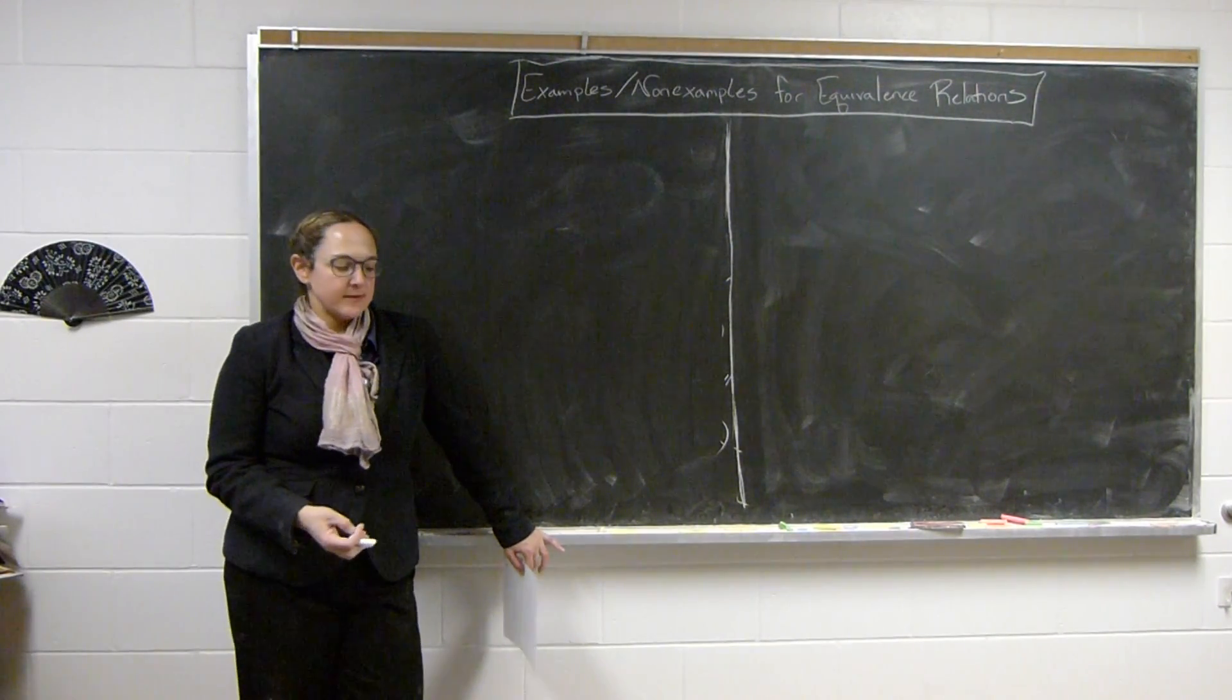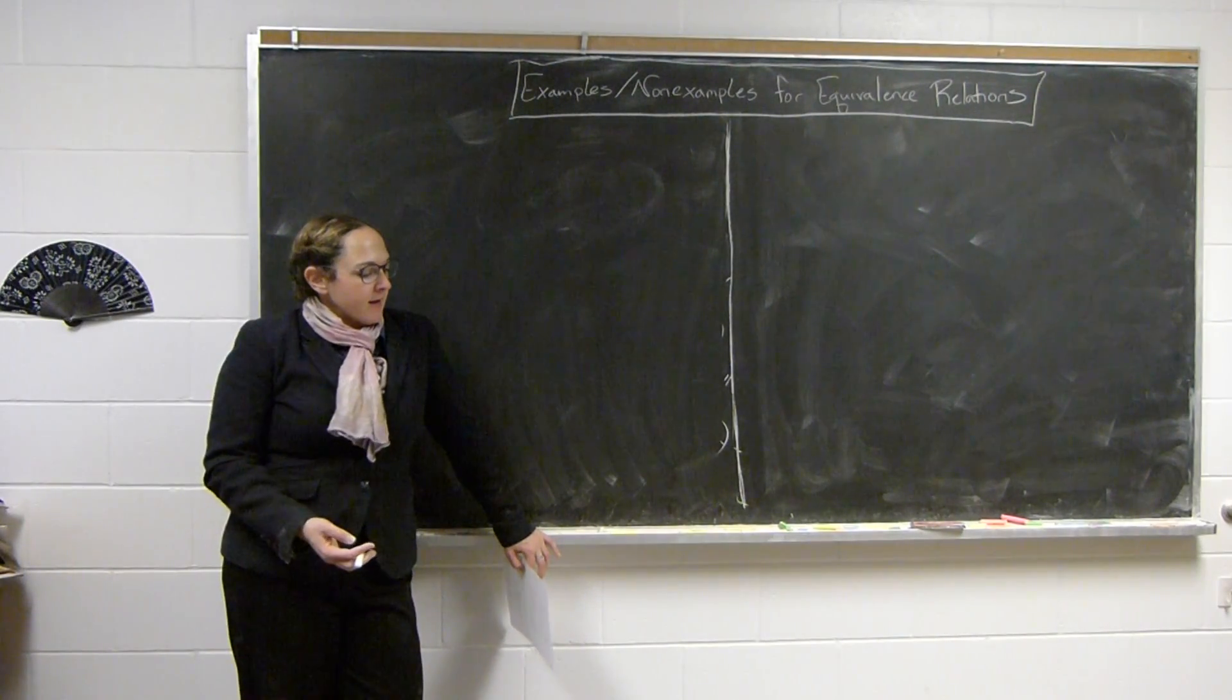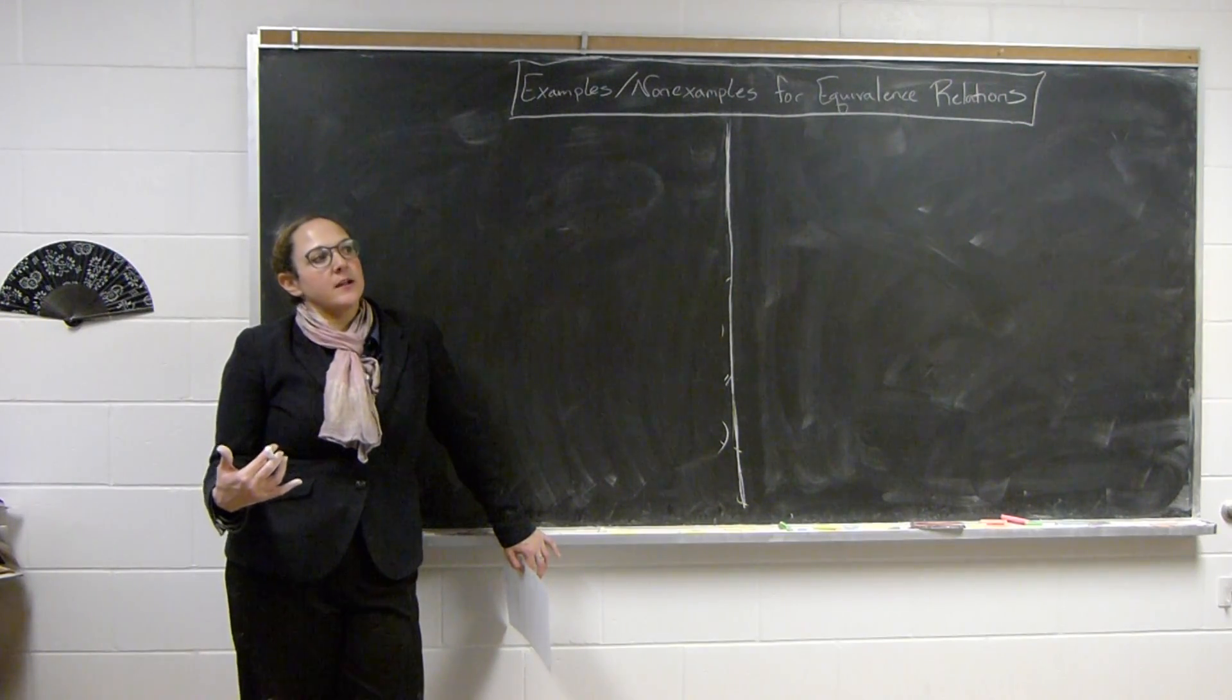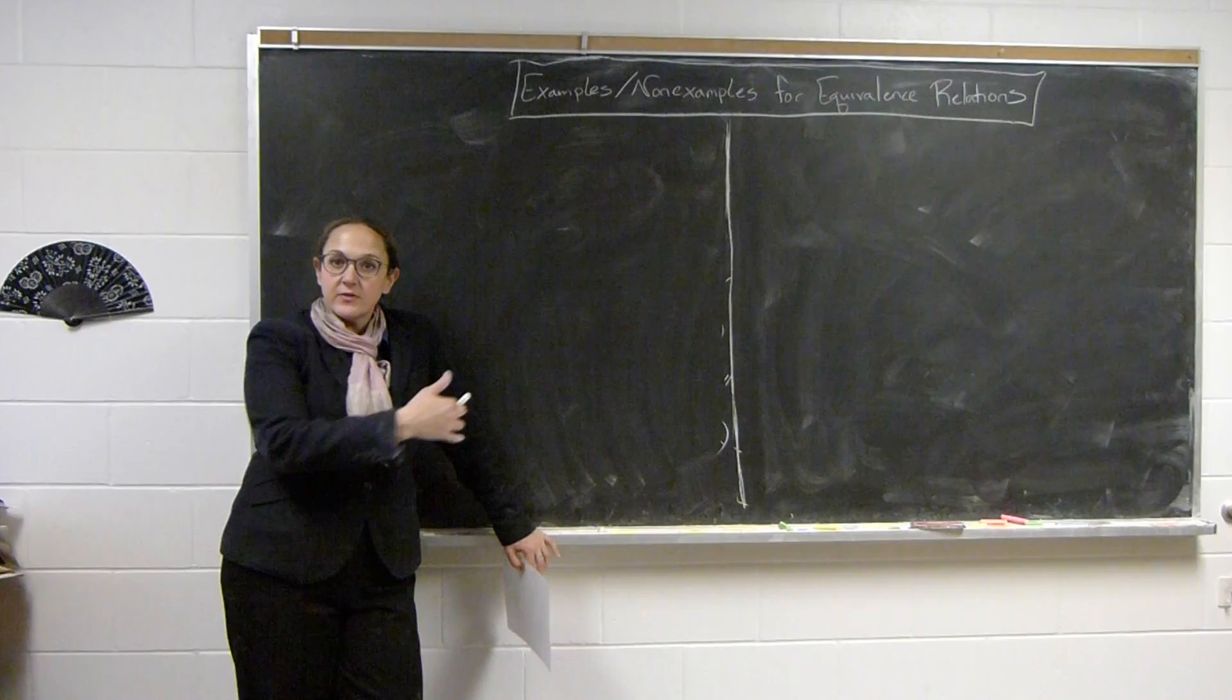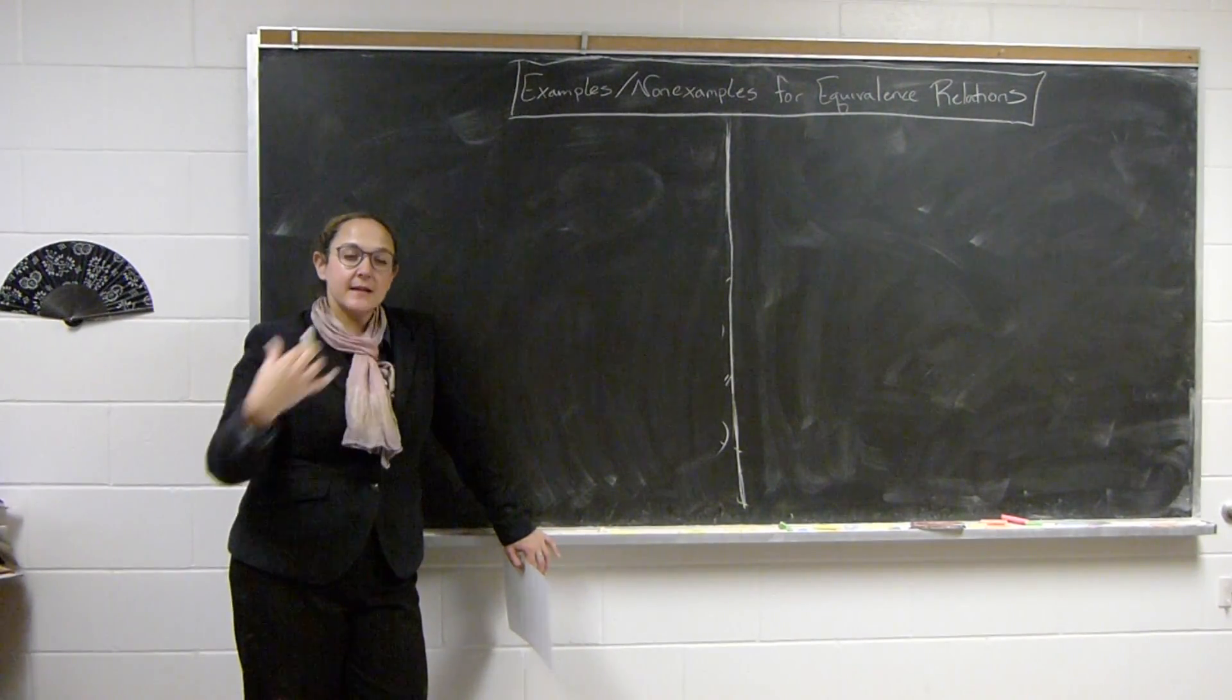So we had that equivalence relations were relations, i.e. subsets of the Cartesian product, that had to be reflexive, every element is related to itself, symmetric, if A is related to B then B is related to A, and transitive, if A is related to B and B is related to C then A is related to C.